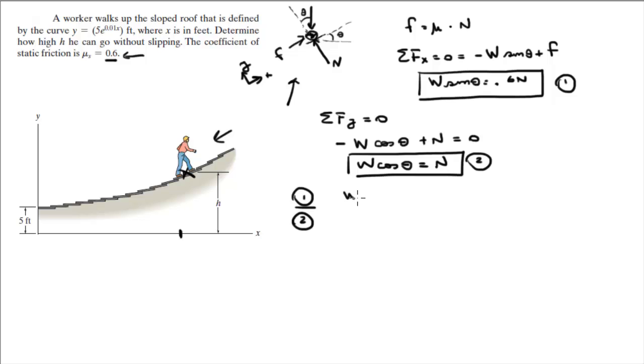Equation 1 which goes on top is w sine of theta is equal to 0.6n divided by w cosine of theta over n. As you can see, the weights cancel out, the normals cancel out, and you got a beautiful tangent of theta is equal to 0.6.